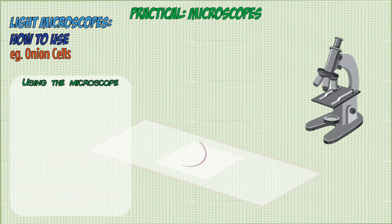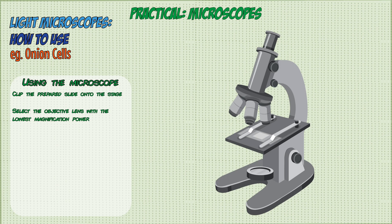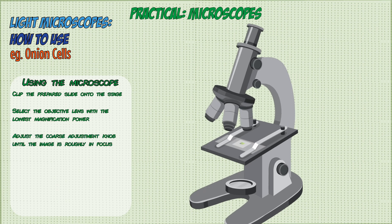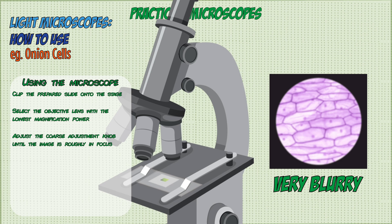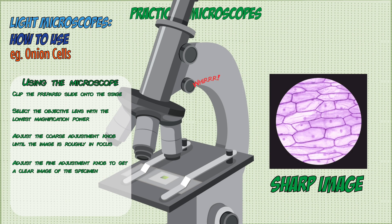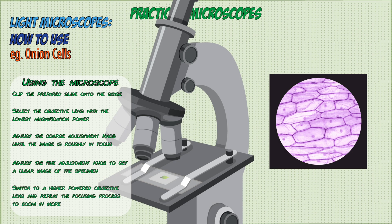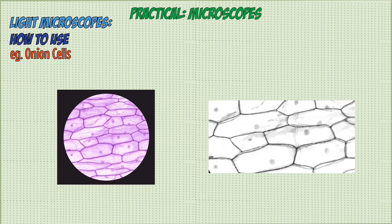Now the slide is ready. Clip it onto the stage and select the objective lens with the lowest magnification power. Use the coarse adjustment knob to move the stage up and down while looking through the eyepiece until the image is roughly in focus. Then use the fine adjustment knob to get a clear image of the cells. If you want a higher magnification, switch to an objective lens with higher magnification power and repeat the focusing process. You can then draw a diagram of what you observe and include a scale showing the magnification.